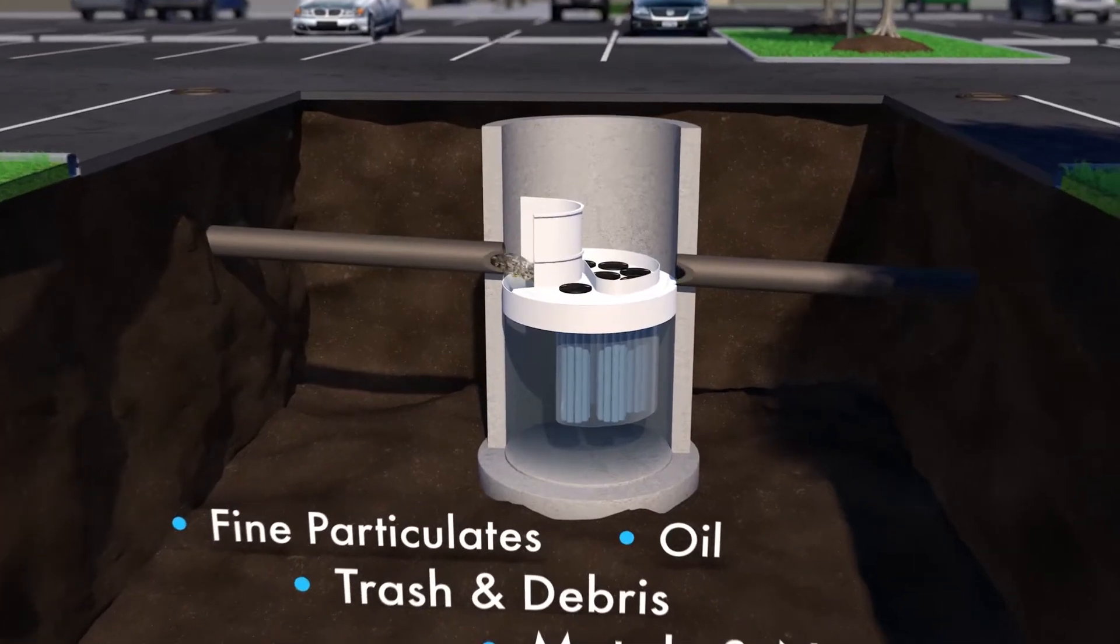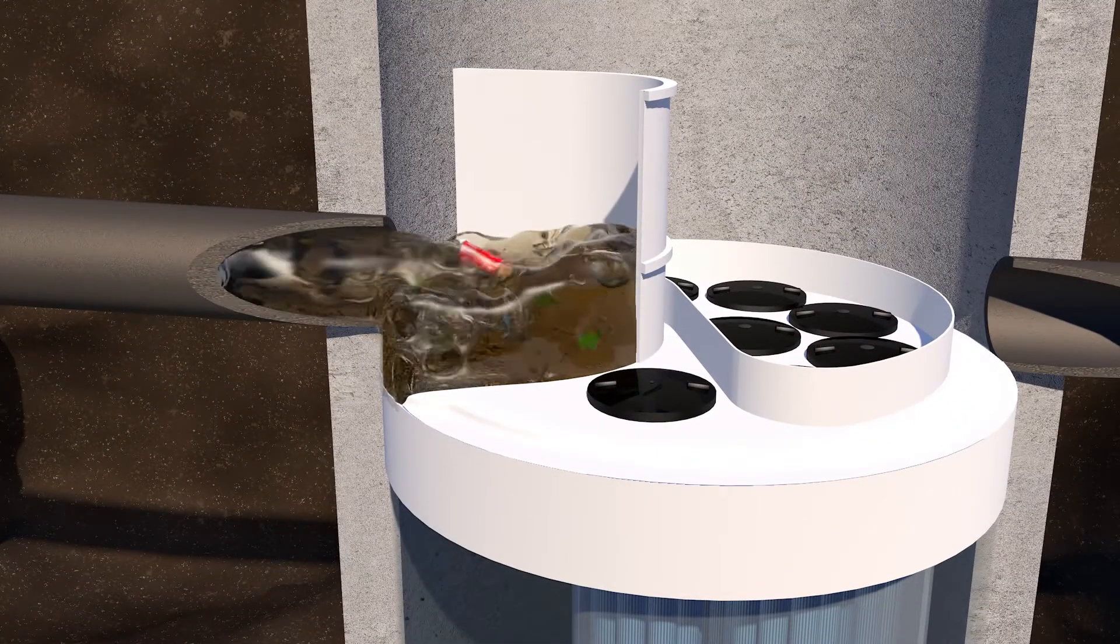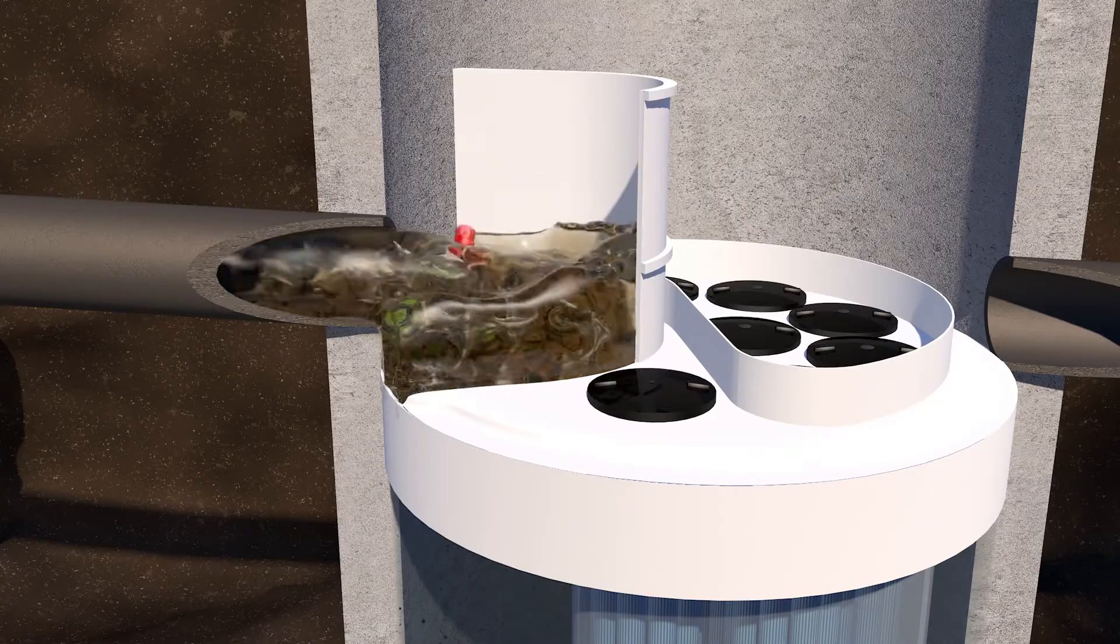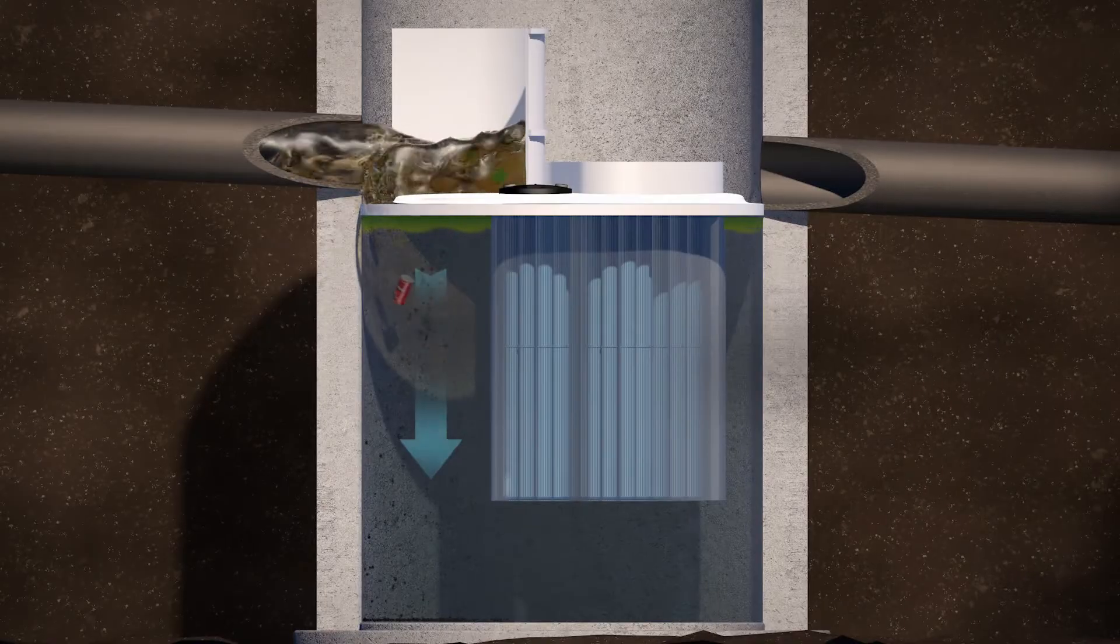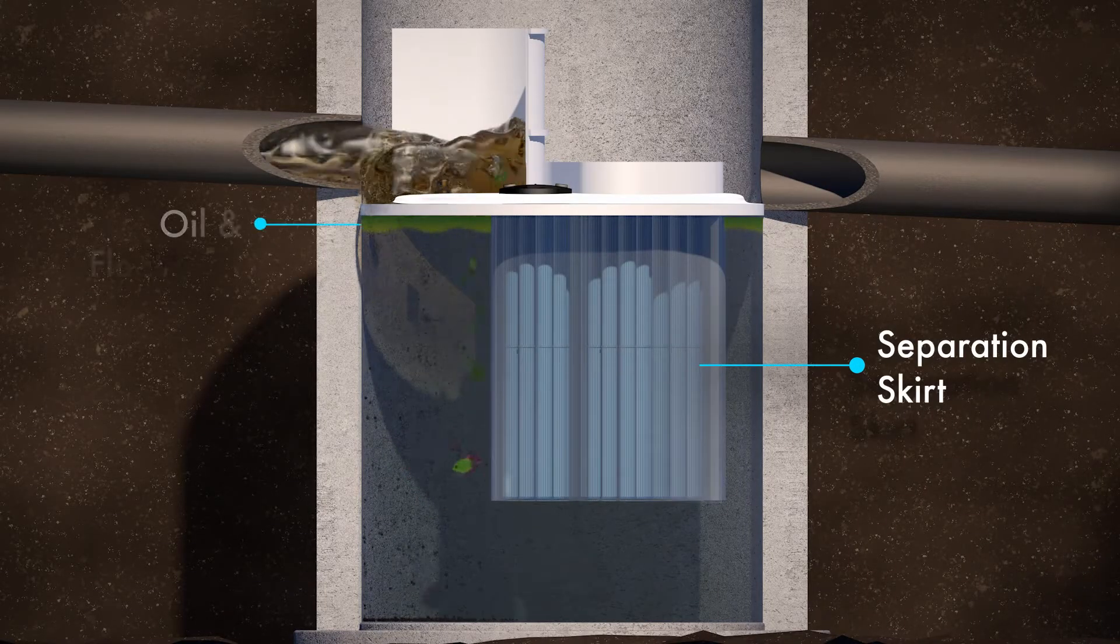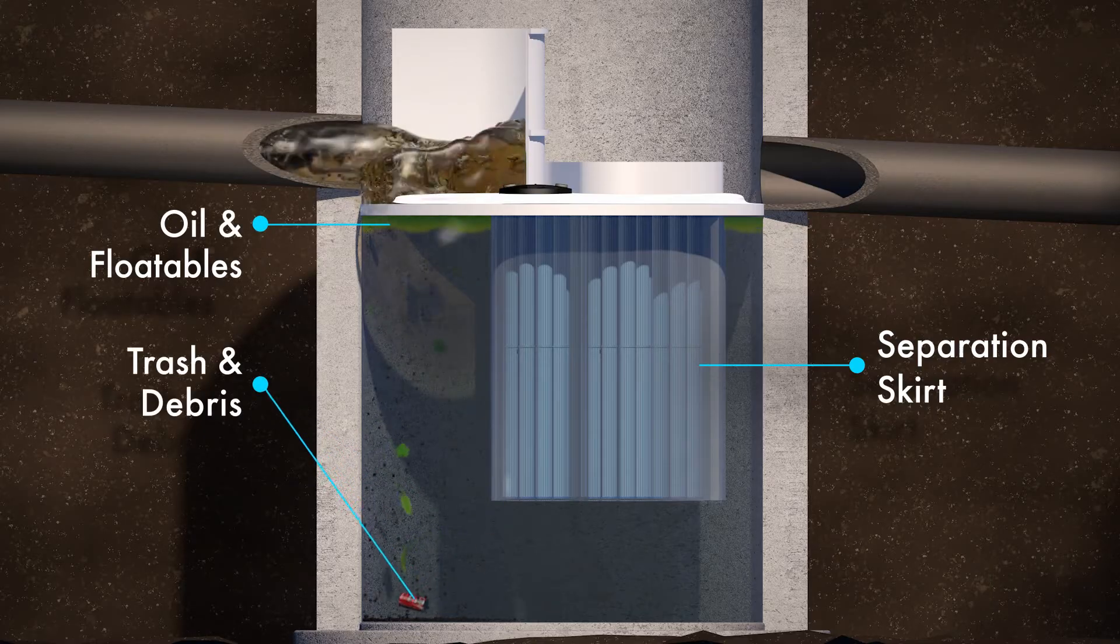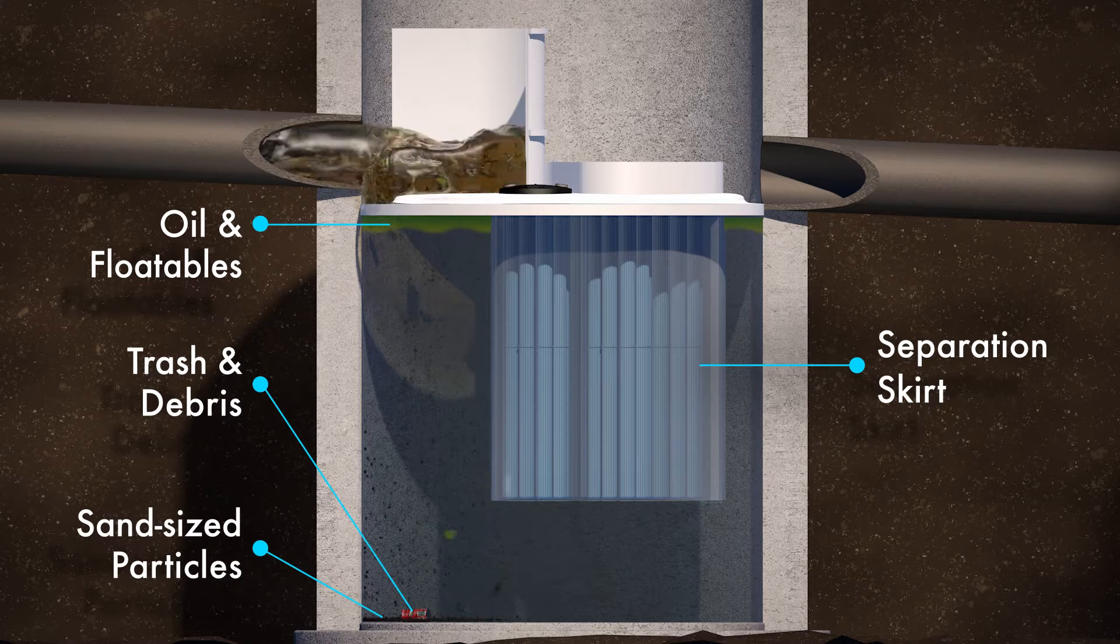Treatment begins as stormwater enters the Jellyfish through the inlet pipe, builds driving head and traps floating pollutants behind the maintenance access wall. Water is pushed down to the treatment chamber, where a separation skirt around the cartridges traps oil, trash and debris outside the filtration zone and allows sand-sized particles to settle below the cartridges in the sump.